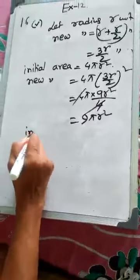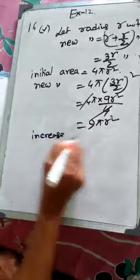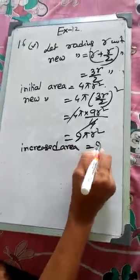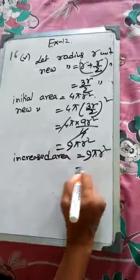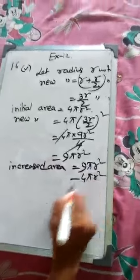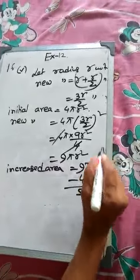What is the increased pattern? Increased area is equal to 9π R² minus 4π R². That is 5π R². Please write it square unit.